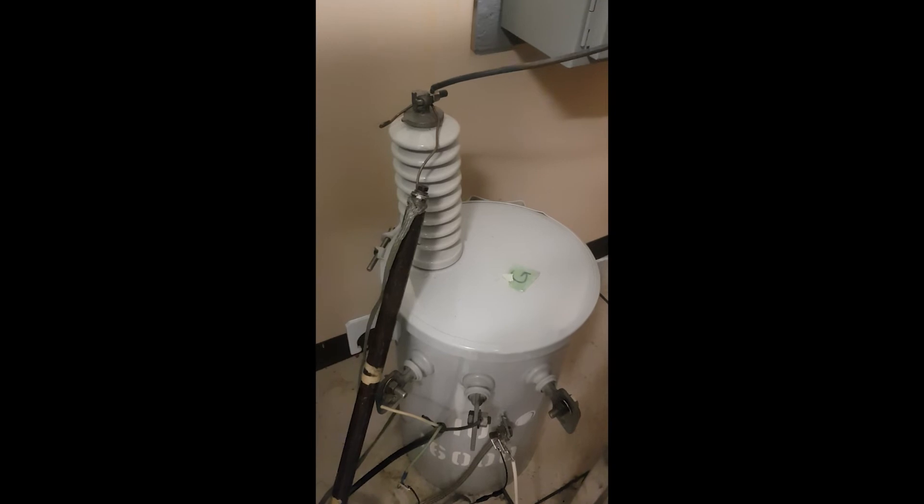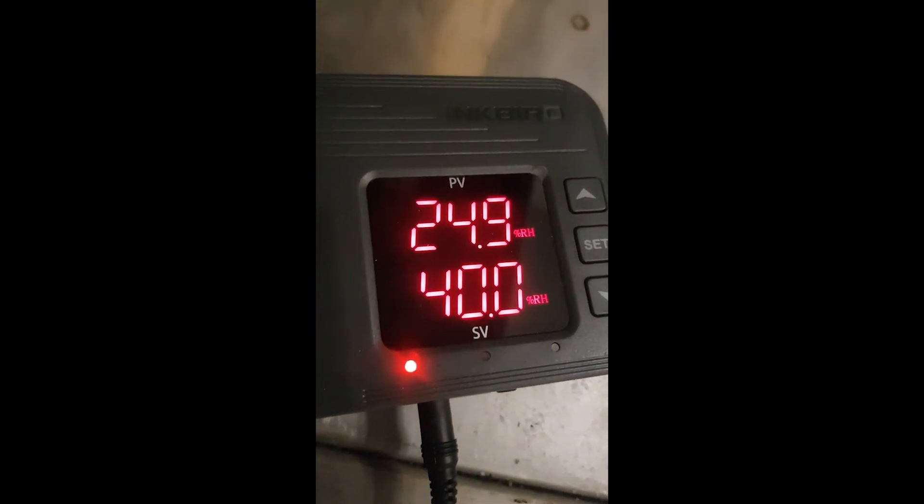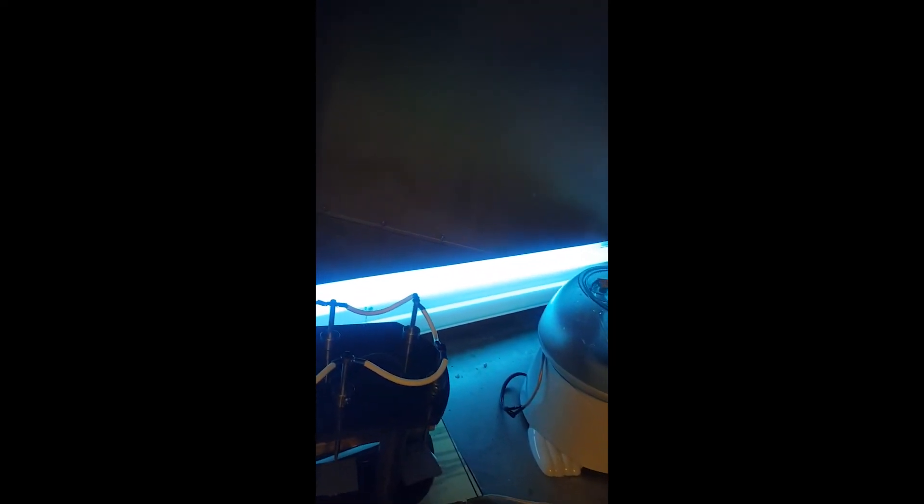This is the setup. This is the high voltage transformer. And this high voltage transformer is connected through a bushing towards inside the chamber. This is the bushing, and this bushing is connected through a high voltage electrode system. So you see here the sharp point here. And these are the samples. And then this is the humidifier which has the sensor. This is the sensor of the humidifier. And here is the controller. From here we control the required humidity level. And this is the UV lamp that will be used for the UV aging. So this is the overall corona setup that we have.